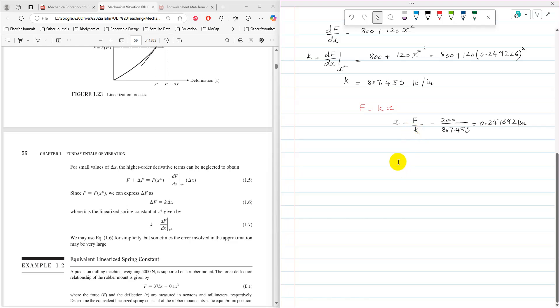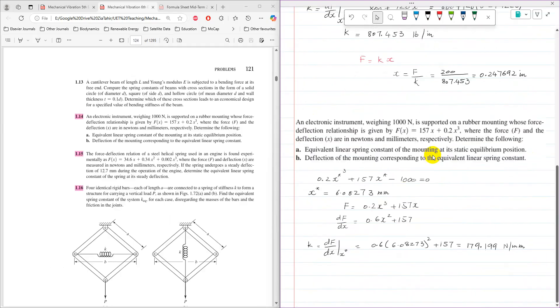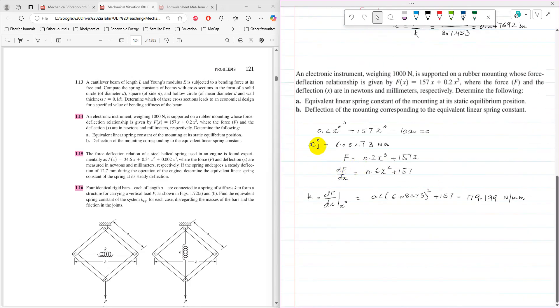And that is the end of the tutorial. If you have to solve the same problem using 6th edition, then you will have that equation. The valid value of x will be 6.08273, and then k = df/dx. The value of k comes as 179.199 newtons per millimeter. Thank you very much for watching.